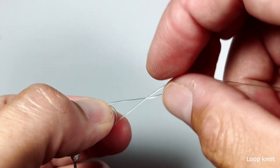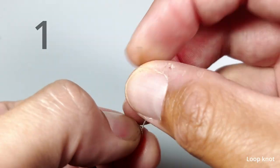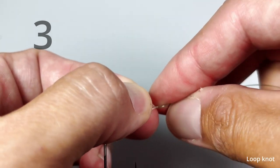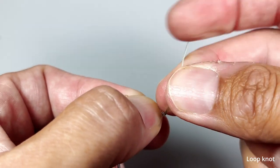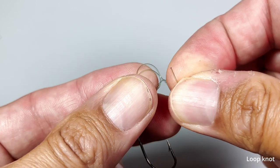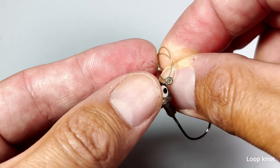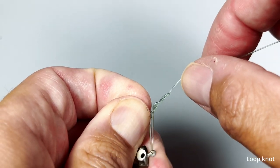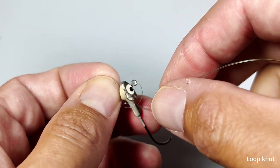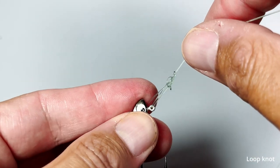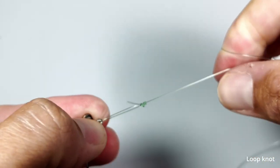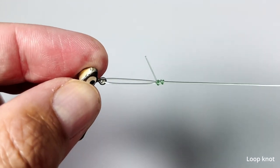Now wrap the tag end around the main line three or four times. Then take the tag end and pass it back down through the loop. Hold the tag end on the other side of the loop and pull the main line tight. This knot allows the jig head to move a little more freely underwater.